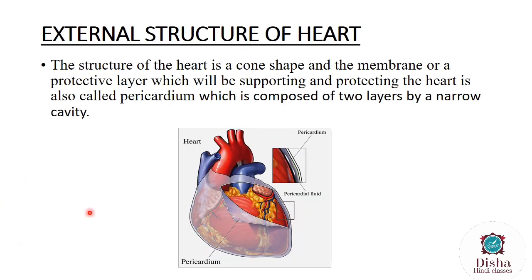Now we will look at the external structure of the heart, which is an important aspect. Till now we have seen the pericardial space and pericardial membrane, which come under the external structure of the heart. The structure of the heart is cone-shaped — we can see it is in a somewhat triangular shape, which can also be seen as cone-shaped. The membrane or protective layer which supports and protects the heart is called the pericardium. The heart is composed of two pericardial layers.